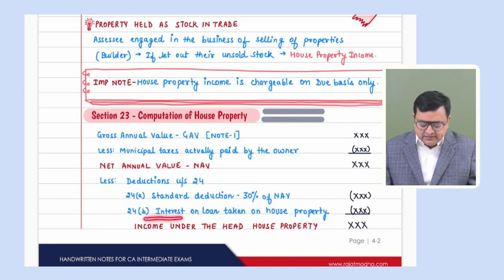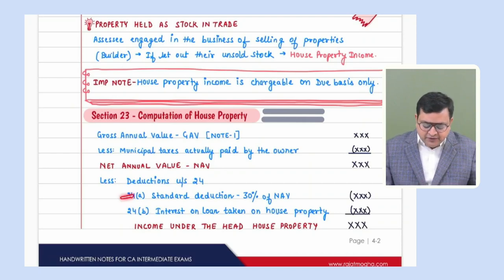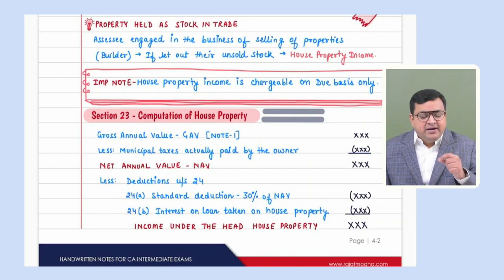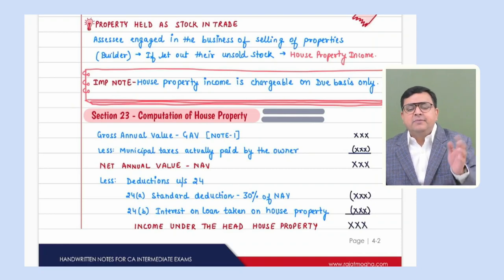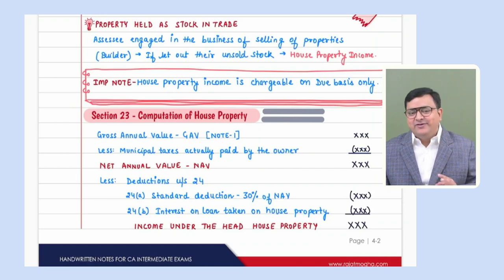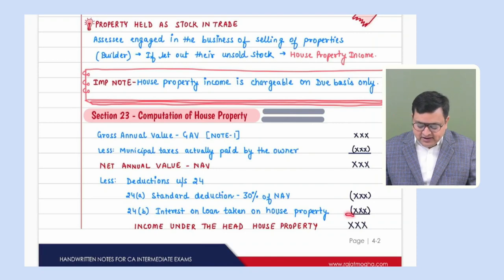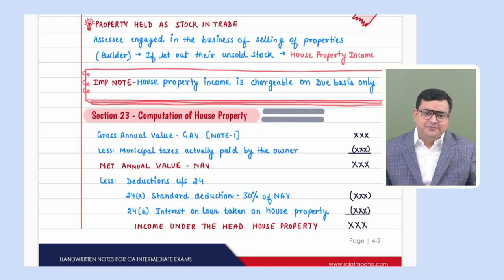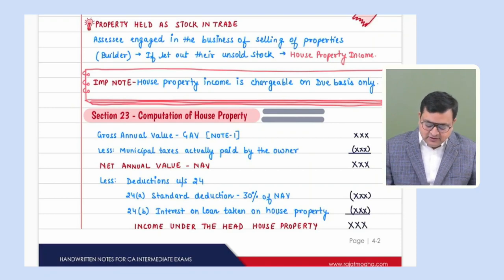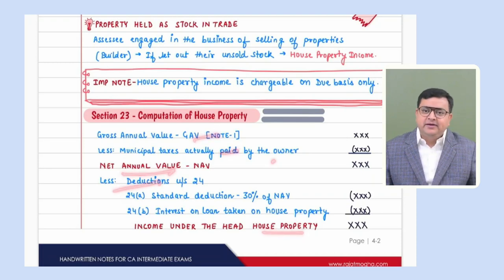Interest on loan is deductible under Section 24B. After deducting these expenses, the examiner might confuse you by saying the assessee has paid repairs of the house, insurance, or depreciation — please don't fall into that trap. Only 24A and 24B will be allowed. After deducting these deductions, you will get income under the head of house property. The format is: GAV minus municipal taxes paid gives NAV; from NAV, deduct Section 24 deductions to get house property income.